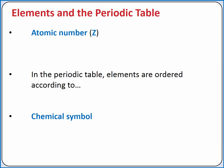Different elements are distinguished by the number of protons in the atom, which is called the element's atomic number. In the periodic table, elements are ordered according to increasing atomic number.